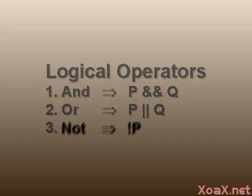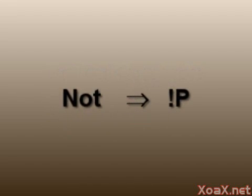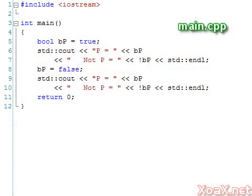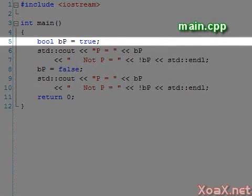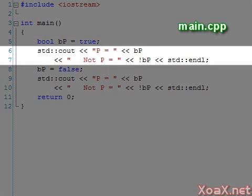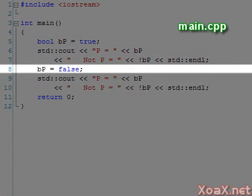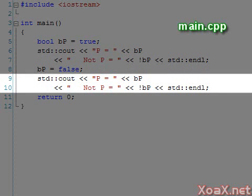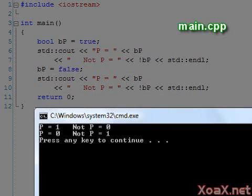Since not is the simplest of the operators, we will begin by demonstrating its usage in our first program. We begin by declaring a boolean variable p and assigning it the value of true, then we output the values of p and not p. Next, we set p to false and output the values of p and not p again. Executing the program, we see the output which describes the truth table for the not operator.